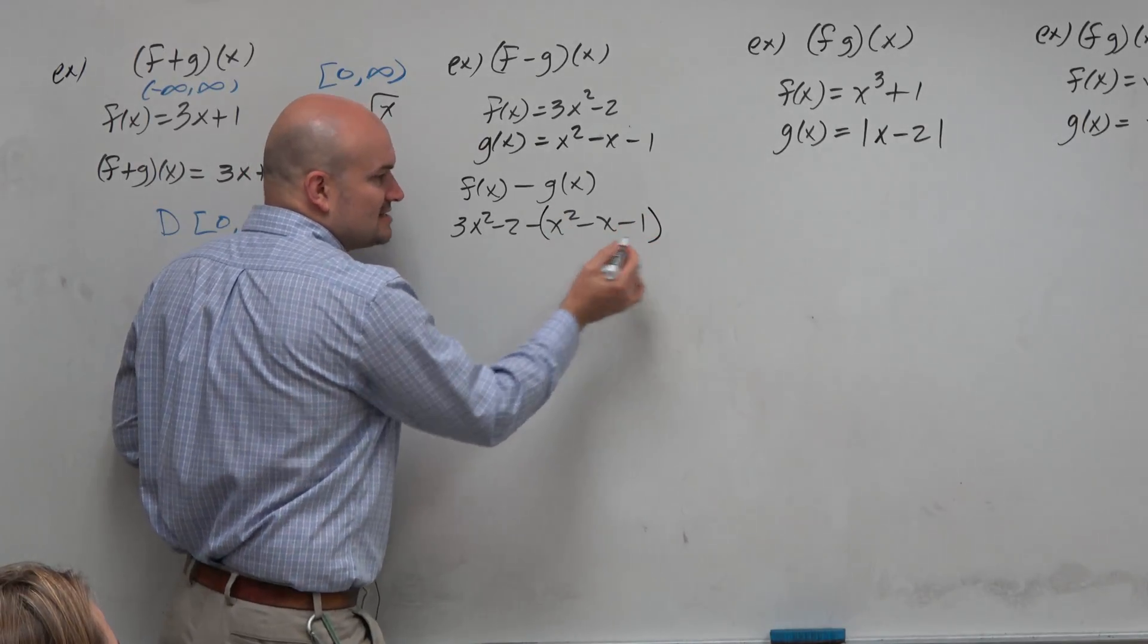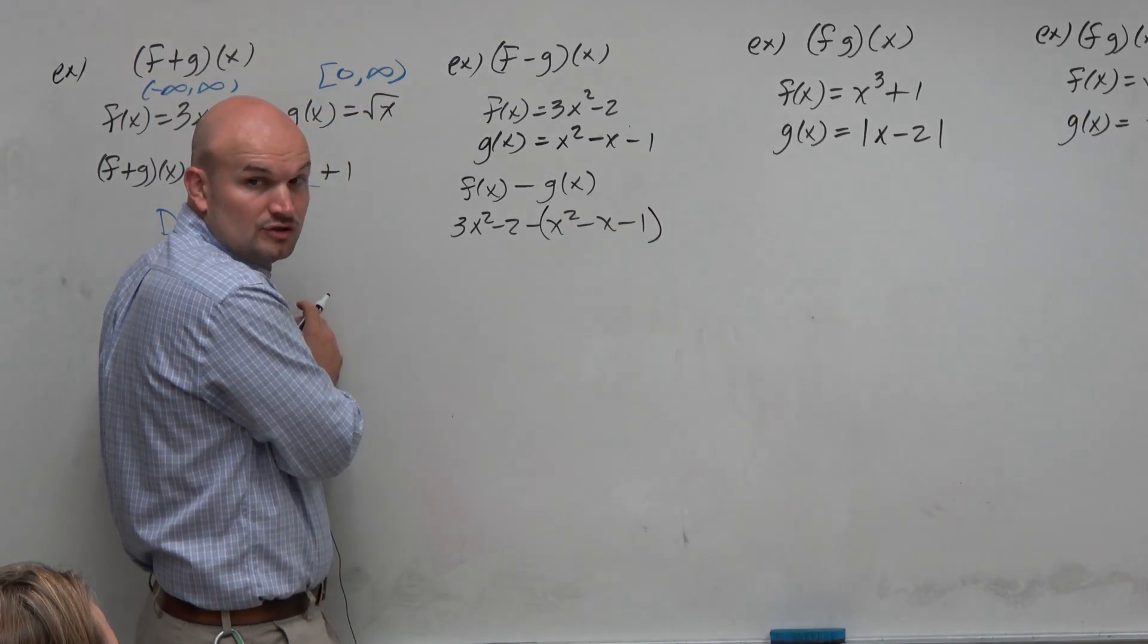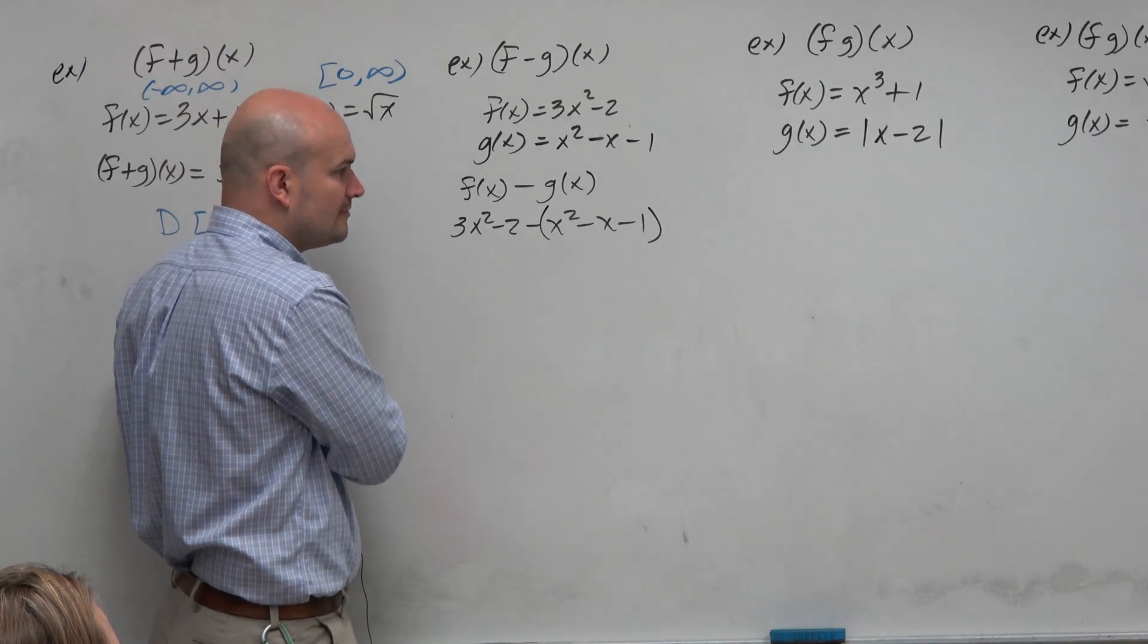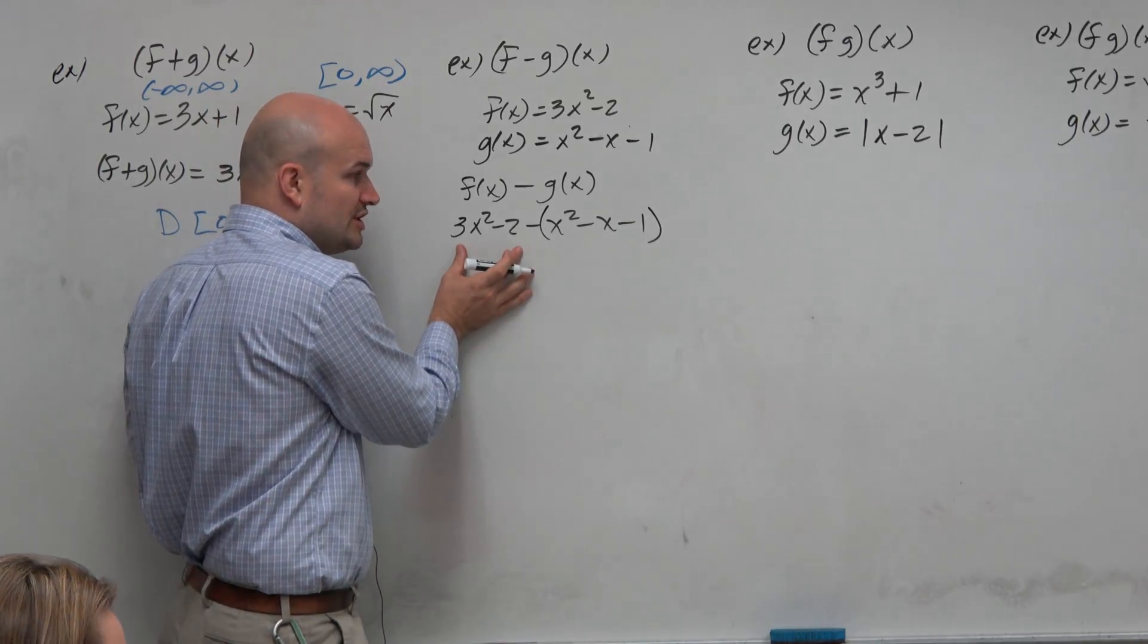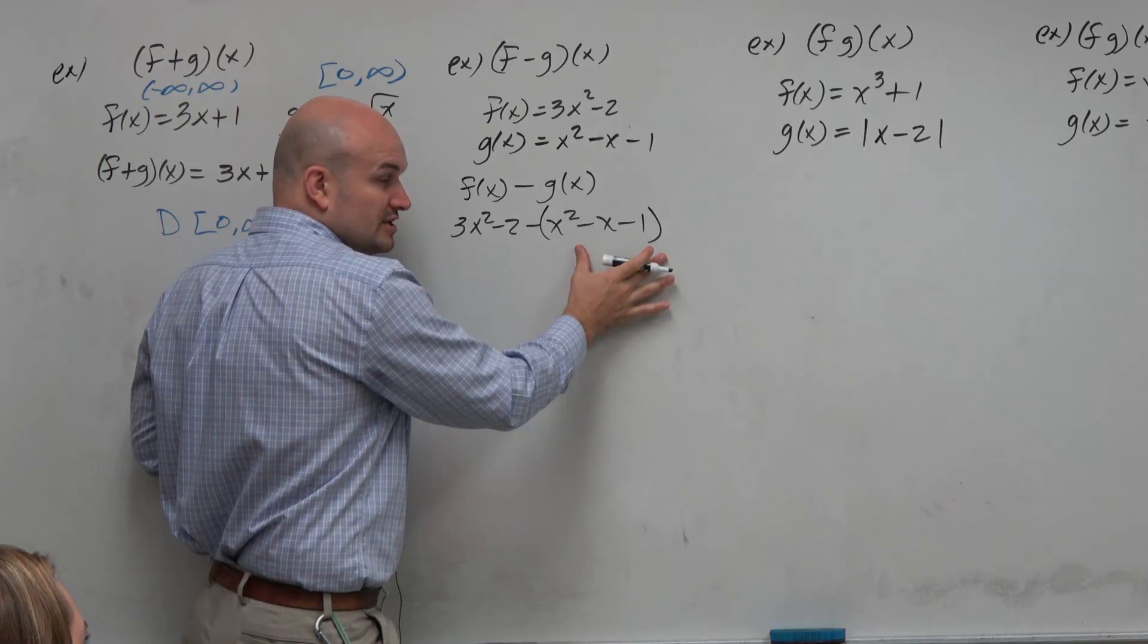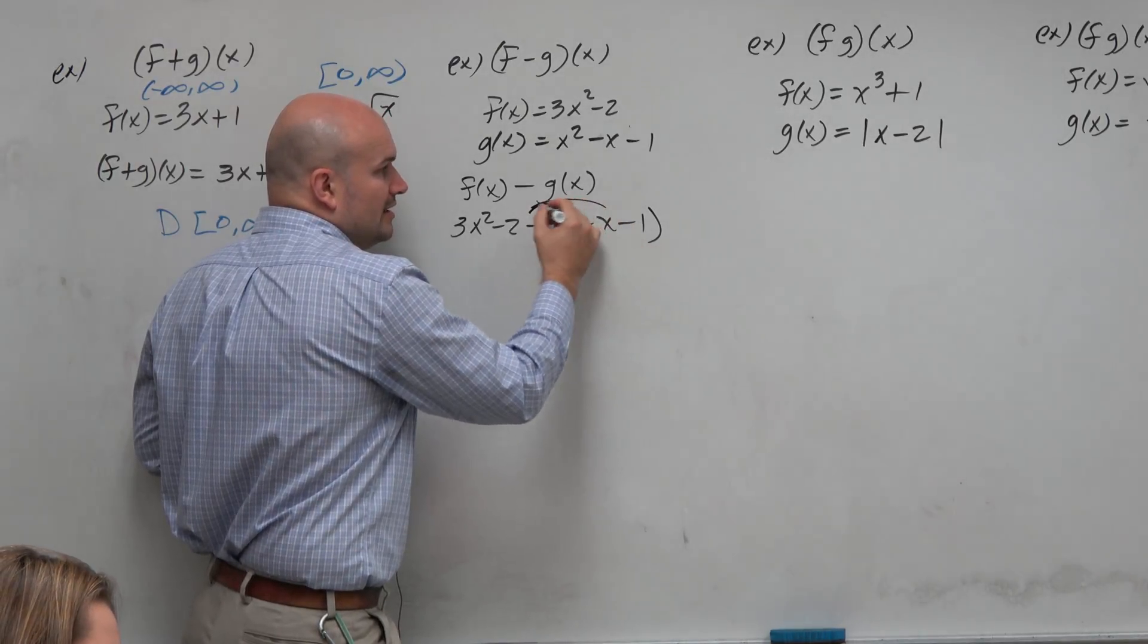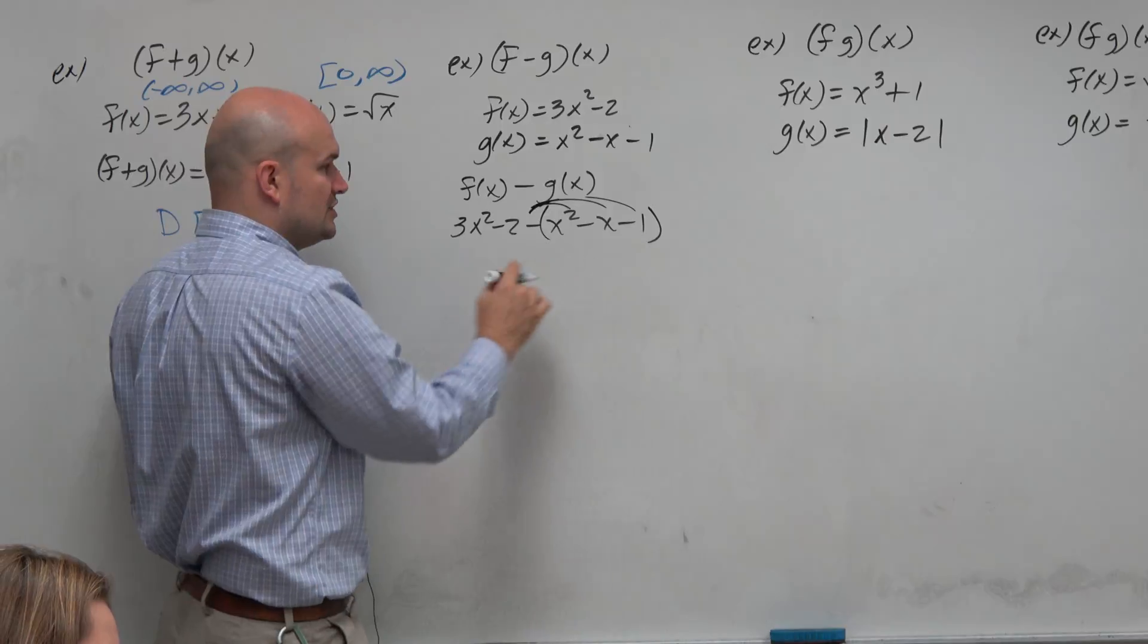To properly write this, we need to make sure that we insert our grouping symbol like parentheses to represent that you're taking this function and subtracting this function. So what that's telling us to do is we need to distribute that negative across all of the terms.